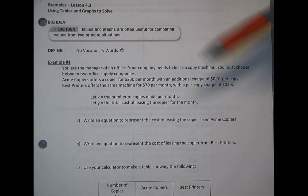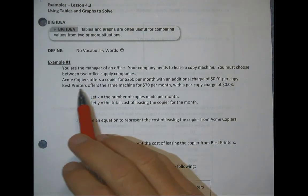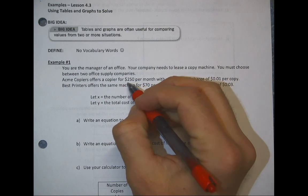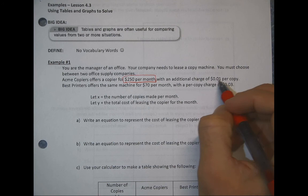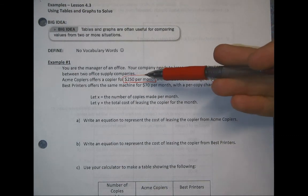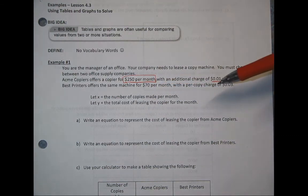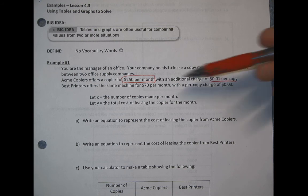Example number one: you're the manager of an office and your company needs to lease a copy machine. You must choose between two supply companies, and we're going to figure out which is the better price. Acme Copiers offers a copier for $2.50 per month with an additional charge of $0.01 per copy. So you're leasing it — $2.50 a month plus $0.01 for every copy. If you don't make many copies, it'll be close to $2.50; the more copies, the higher the price.